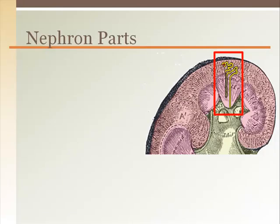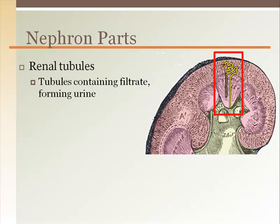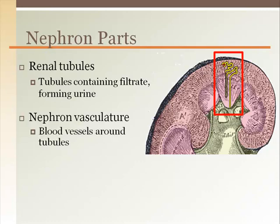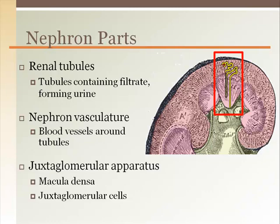The nephron is the functional unit of the kidney — a single blood filtration and reabsorption unit. It is composed of a tubule containing the filtered substances and surrounding capillaries for reabsorption to take place. Regulatory cells from the juxtaglomerular apparatus control some aspects of the filtration process. The nephron begins and ends in the renal cortex, with the middle region dipping into the medullary pyramids.